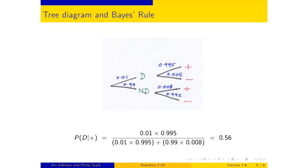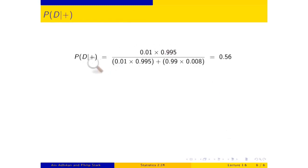That is simply an application of Bayes' rule. As a calculation it's easy enough to do, but as an answer to understand, it raises questions. This test is OK — its error rates are relatively small. And yet the person has tested positive and we're saying the chance they have the disease is around a half? This is like tossing a coin. What good was that test?